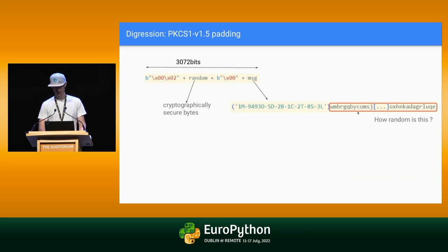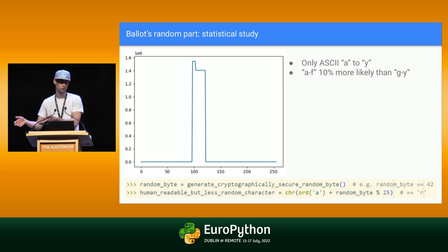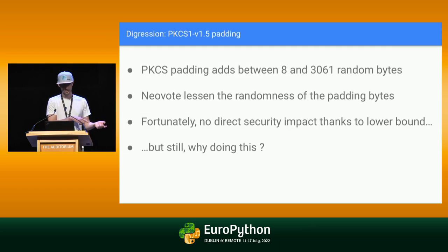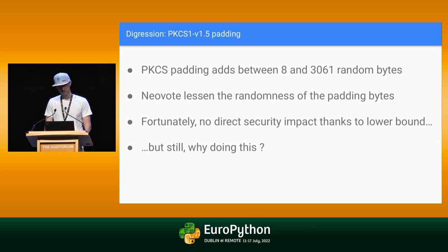Basically, what they're doing is replacing the cryptographically secure random bytes from the PKCS padding with something less random. I don't know why they do this, but it's not a great idea. It's not a security issue because PKCS is well-made and there must be at least eight cryptographically secure random bytes. But it's still weird. Now I can start to slow down — I thought I'd be much slower.